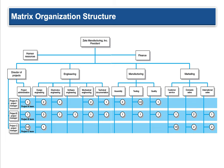In the matrix org chart: you have your president, HR, and CFO, then traditional departments like engineering, manufacturing, and marketing. Engineering has design engineers, electronics, software, mechanical, and technical documentation. Manufacturing has assembly, testing, and quality control. Marketing has customer service, domestic and international sales. Then there's a separate offshoot with a director of projects, project administration, and project managers for projects A, B, and C — each reporting to the director of projects. Project administration assembles the teams that each project manager works with: A team, B team, C team — coordinating across all different parts of the organization.